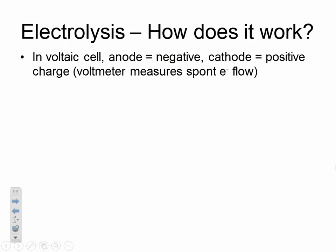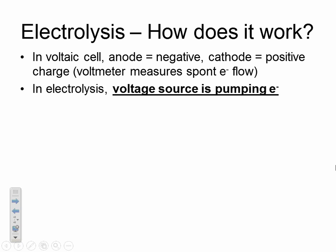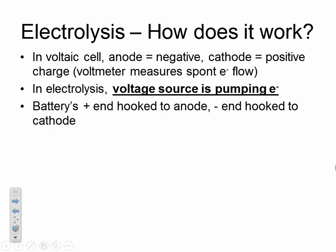So how does electrolysis work? How can a battery drive this non-spontaneous reaction? It's all about the signs on the electrodes. In a voltaic cell, the anode is negative and the cathode is positive — the anode is negative because it is shedding electrons. In an electrolytic cell, the voltage source pumps the electrons by fundamentally switching the charges on the anode and cathode.